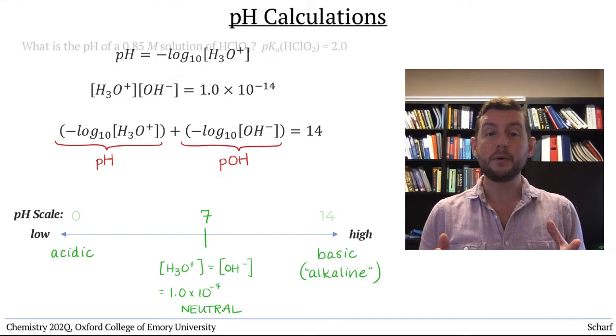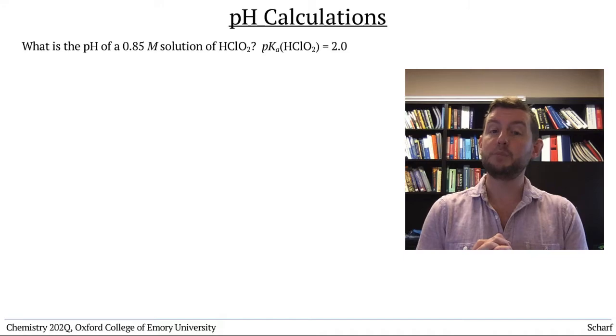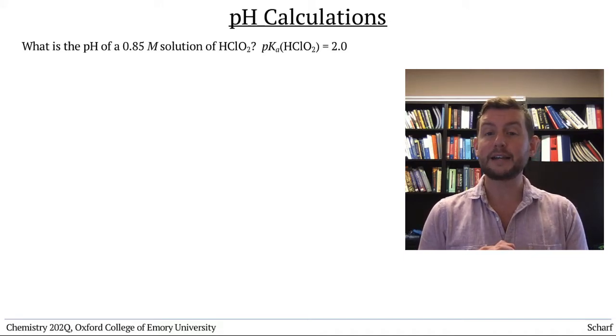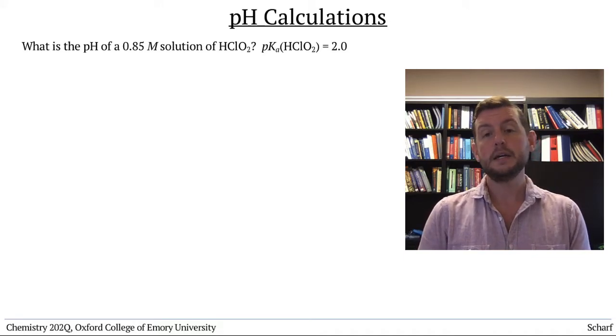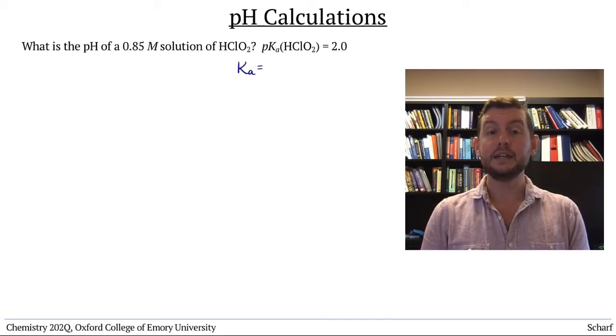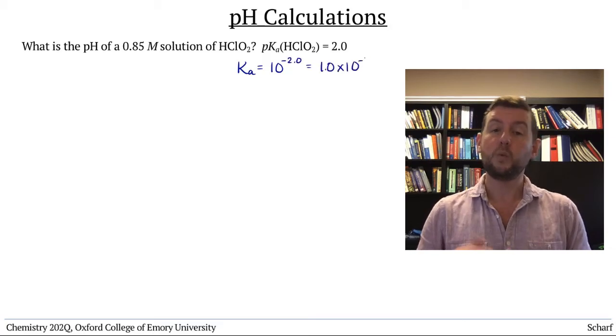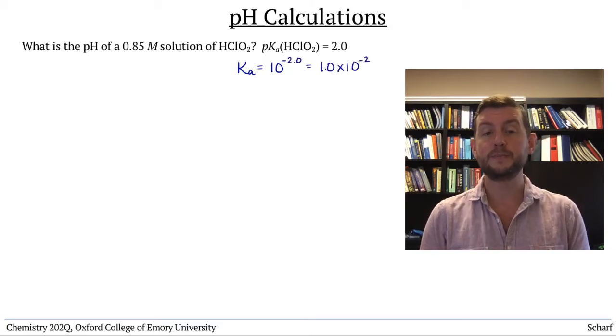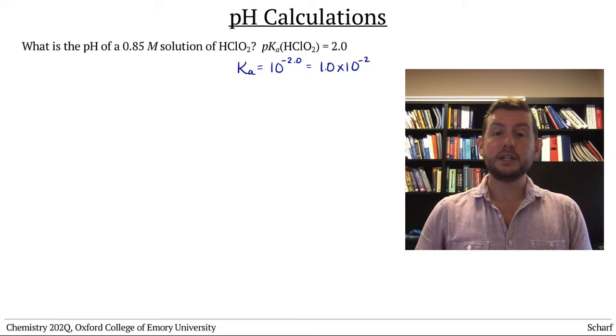Let's take for example a 0.85 molar solution of chlorous acid, HClO2. This acid has a pKa of 2.0, so its Ka is 10 to the negative 2.0, or 1.0 times 10 to the minus 2.